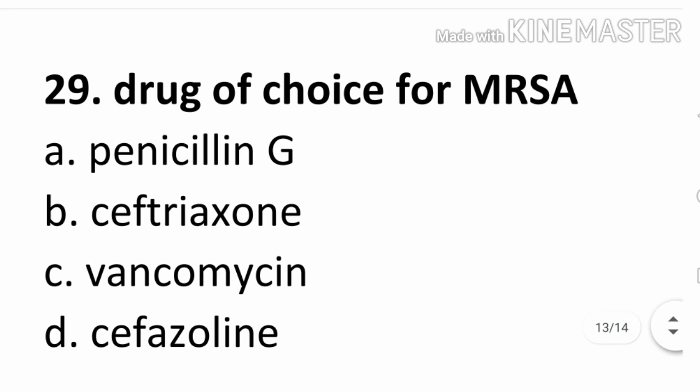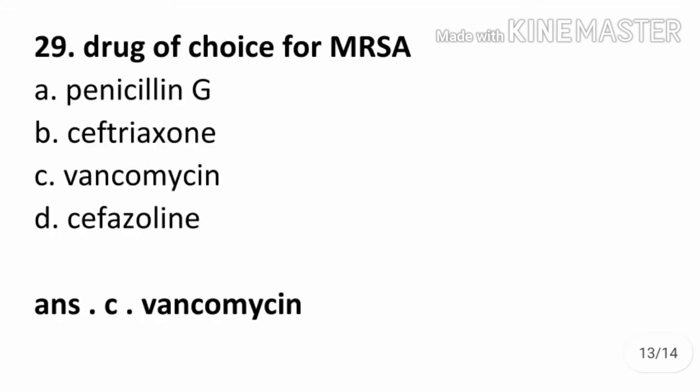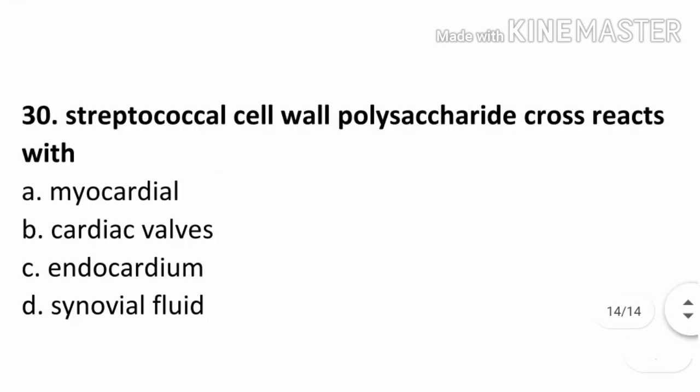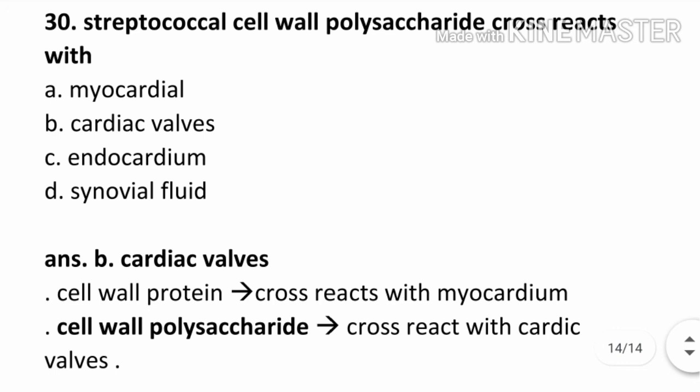Question number 29. Drug of choice for MRSA — methicillin-resistant Staphylococcus aureus: Option A. Penicillin G, Option B. Ceftriaxone, Option C. Vancomycin, Option D. Cephazolin. The correct answer is C. Vancomycin. Question number 30. Streptococcal cell wall polysaccharide cross-reacts with: Option A. Myocardial, Option B. Cardiac valves, Option C. Endocardium, Option D. Synovial fluid. The correct answer is B. Cardiac valves. Cell wall protein cross-reacts with myocardium, but cell wall polysaccharide cross-reacts with cardiac valves.